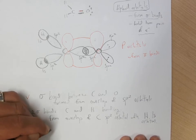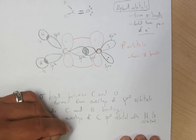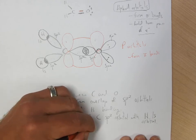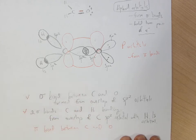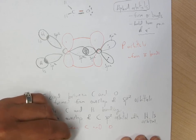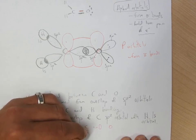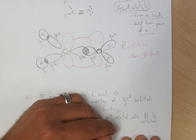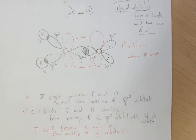two sigma bonds between carbons and hydrogens from the overlap of the carbon SP2 orbital with the hydrogen 1s orbital, and now we have a pi bond between carbon and oxygen from the overlap of p-orbitals on each.